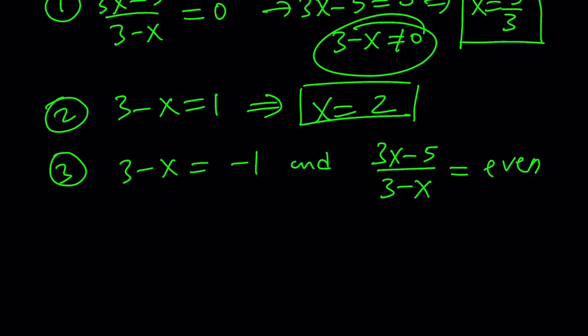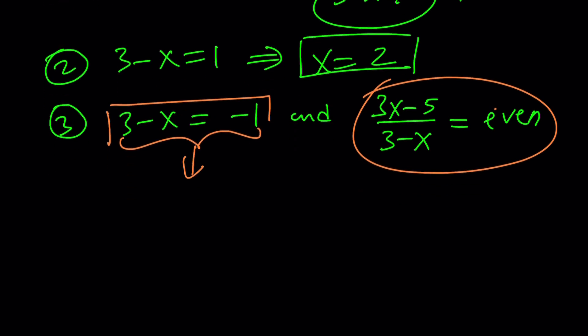Now, looking at this first, it's going to be pretty hard, because this can be even for a number of values. We can set it equal to 2n, try to solve for x, but there's no need, because we have a really nice value here, which may or may not work. Well, let's go ahead and check it out. So if 3 minus x is equal to negative 1, that means x equals 4, right?